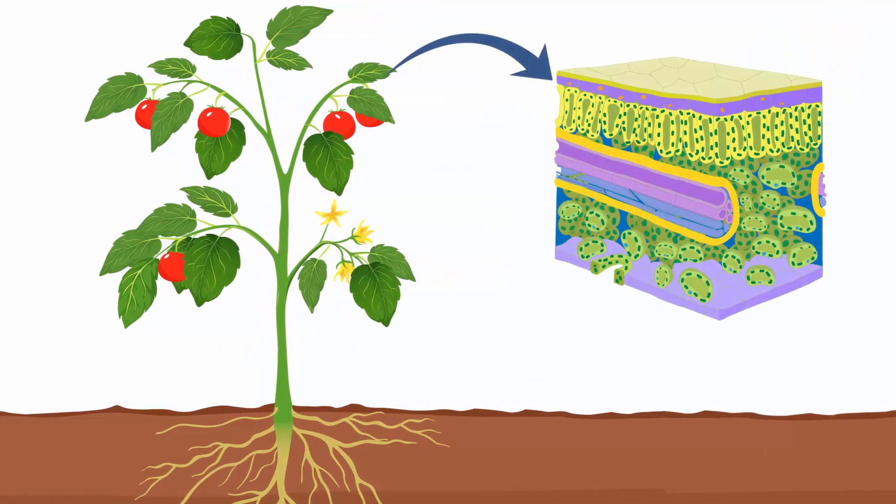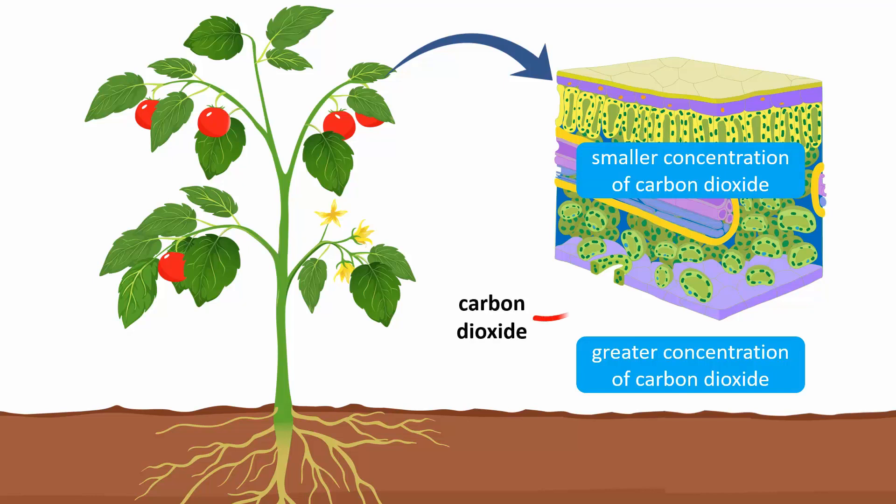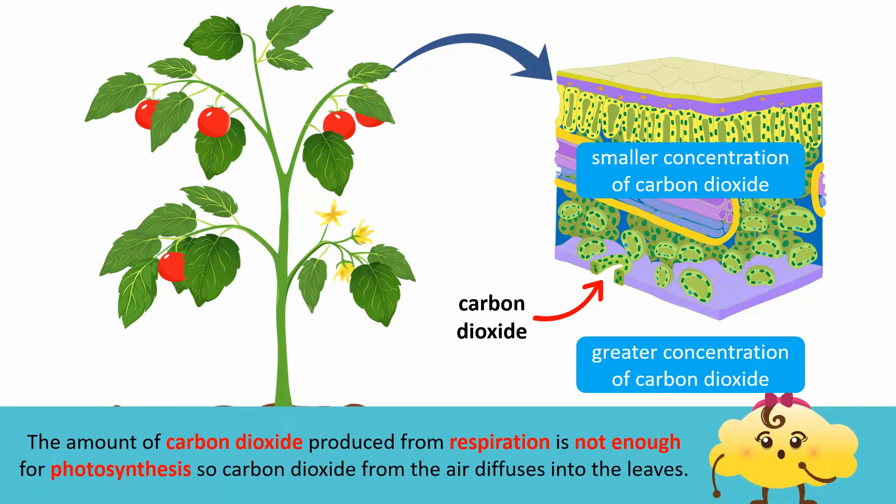Plants take in carbon dioxide during the day for photosynthesis. As there is a greater concentration of carbon dioxide in the atmosphere than inside the leaves of a plant, carbon dioxide diffuses in. The amount of carbon dioxide produced from respiration is not enough for photosynthesis. So carbon dioxide from the air diffuses into the leaves.